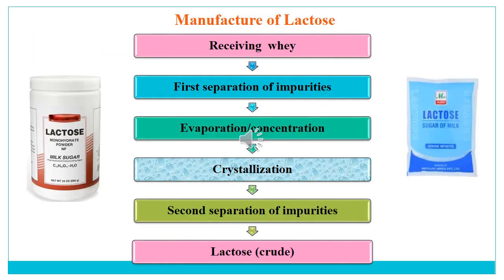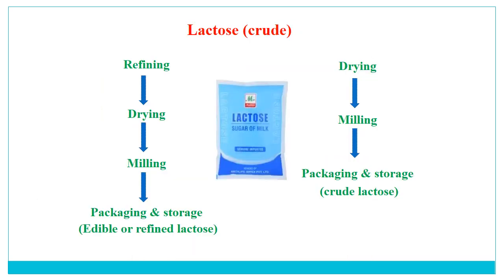The flowchart for manufacture of lactose: first, receiving whey; then separation of impurities; then evaporation and concentration; then crystallization; then a second separation of impurities to yield crude lactose. This crude lactose can be dried, milled, and packaged as crude lactose. Alternatively, it undergoes special refining, drying, and milling to become edible or refined lactose. Further purification and quality improvement yields USP grade lactose.